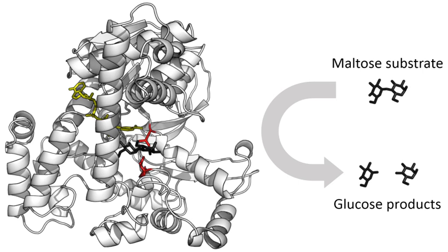Enzyme reaction rates can be decreased by various types of enzyme inhibitors. A competitive inhibitor and substrate cannot bind to the enzyme at the same time. Often competitive inhibitors strongly resemble the real substrate of the enzyme. For example, the drug methotrexate is a competitive inhibitor of the enzyme dihydrofolate reductase, which catalyzes the reduction of dihydrofolate to tetrahydrofolate. This type of inhibition can be overcome with high substrate concentration. In some cases, the inhibitor can bind to a site other than the binding site of the usual substrate and exert an allosteric effect to change the shape of the usual binding site.